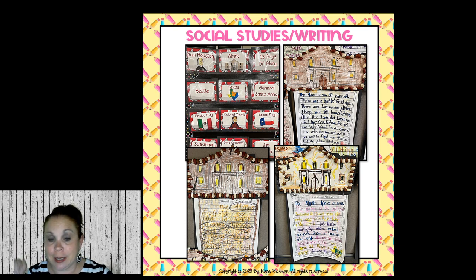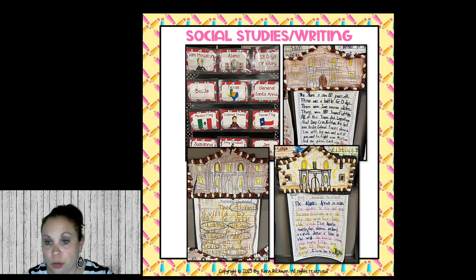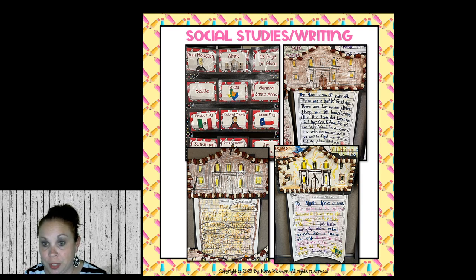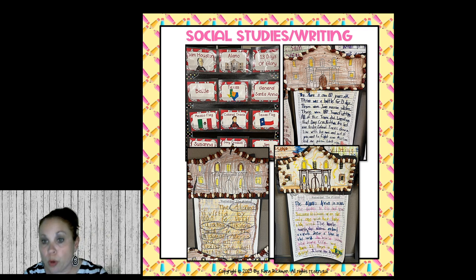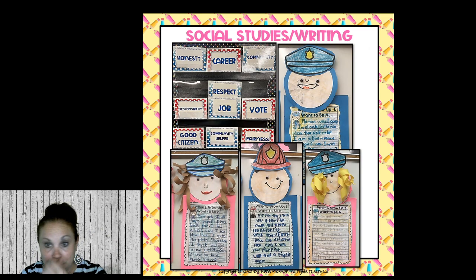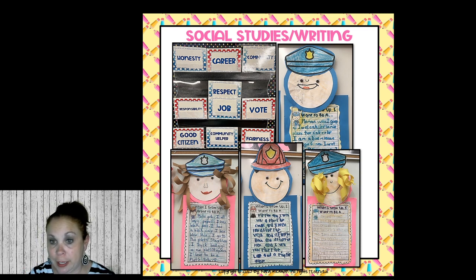If you notice right here at the bottom, this little girl has circled the vocabulary words she used in her story — Alamo, Susanna Dickinson, Mexico, Mexicans, Texas, and 13 Days of Glory. Every time they write a new story with a word bank, I encourage them to use more words the next time and see if they can write even more than before.